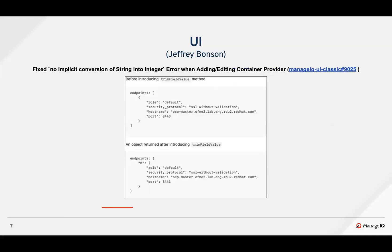Earlier we encountered an error in the container provider form where the hostname had blank spaces causing validations to fail. In the last sprint we addressed this by trimming the unwanted spaces from the field. However, this resolution led to another problem — the endpoints were expected to be an array but returned an object. David refactored the code and added appropriate test cases to resolve this issue.